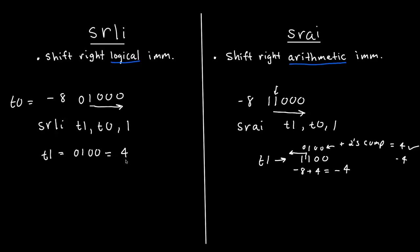And over here, it's just positive 4, because it logically shifted to the right, and didn't account for this most significant bit being negative.